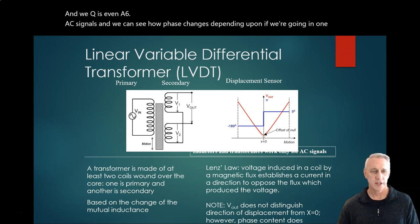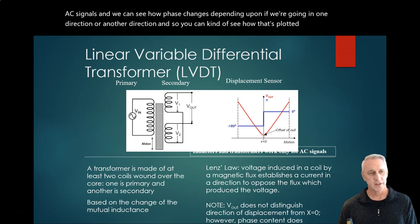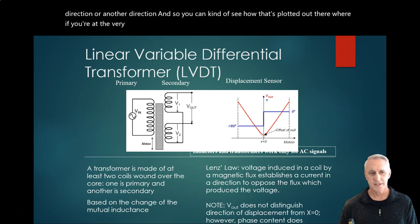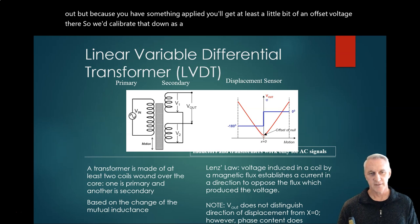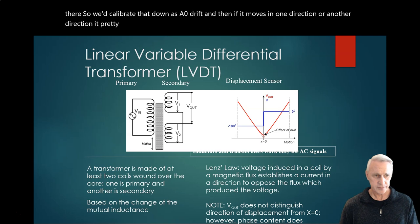You can see how that's plotted out where, if you're at the very middle, that's what we call the offset null. Ideally, it would be zero volts out, but because you have something applied, you'll get at least a little bit of an offset voltage there, so we'd calibrate that down as a zero drift. Then if it moves in one direction or another, you know it pretty instantly, so that's a quick way to know.